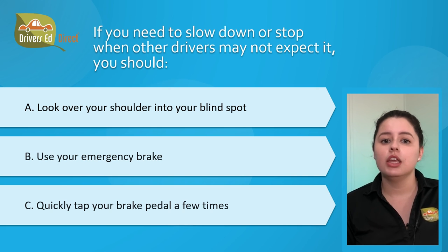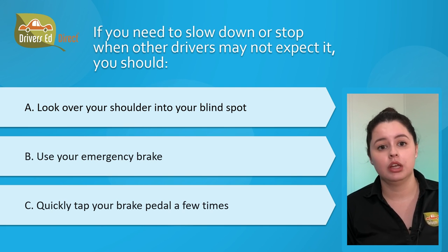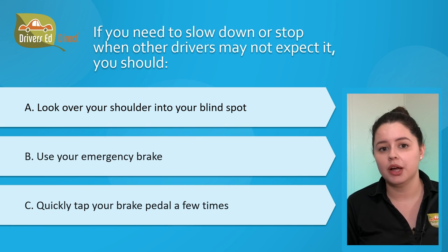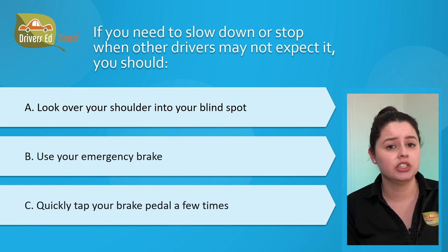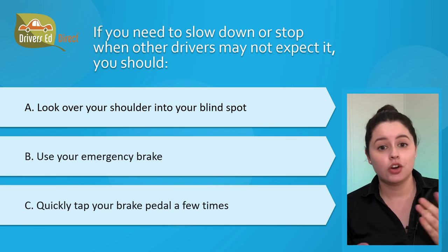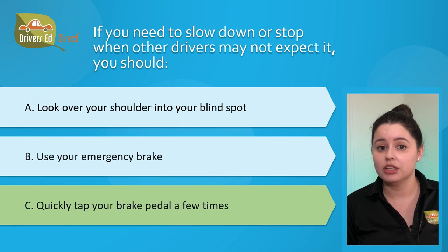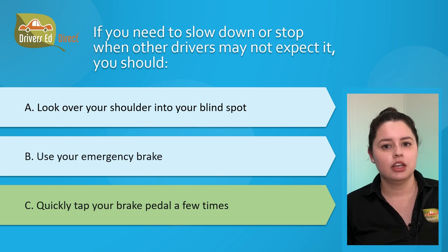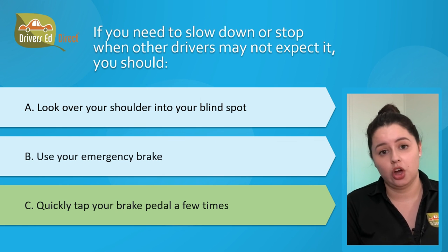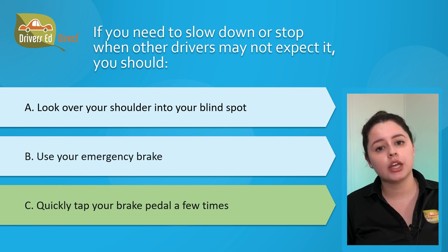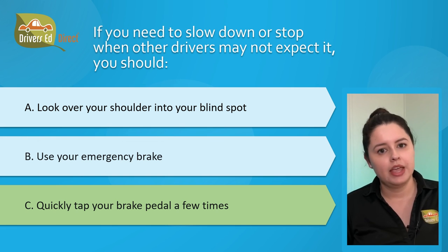Question number twenty-four: if you need to slow down or stop when other drivers may not expect it, you should: A) look over your shoulder into your blind spot, B) use your emergency brake, or C) quickly tap your brake pedal a few times. The correct answer is C, quickly tap your brake pedal a few times. Your brake lights warn other drivers that you are slowing down or stopping, so if you have to brake where others may not expect it, just tap your brake pedal a few times to signal you're slowing down.